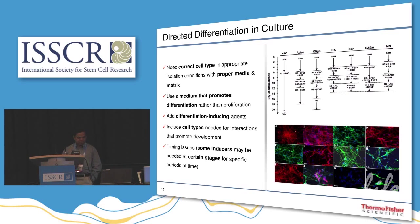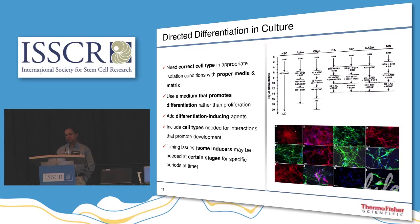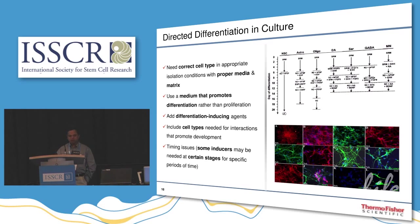The summary from directed differentiation culture: we need a proper starting cell type. If neural stem cell efficiency is high — 90% — downstream differentiation efficiency is also much better. Compare that to rosette-derived NSC at 30–40%: your downstream lineages will be poorer automatically. You also need culture media with factors that promote differentiation. There are timing issues — motor neurons or oligodendrocytes may take 90 days — and there is no shortcut for these developmental blocks.